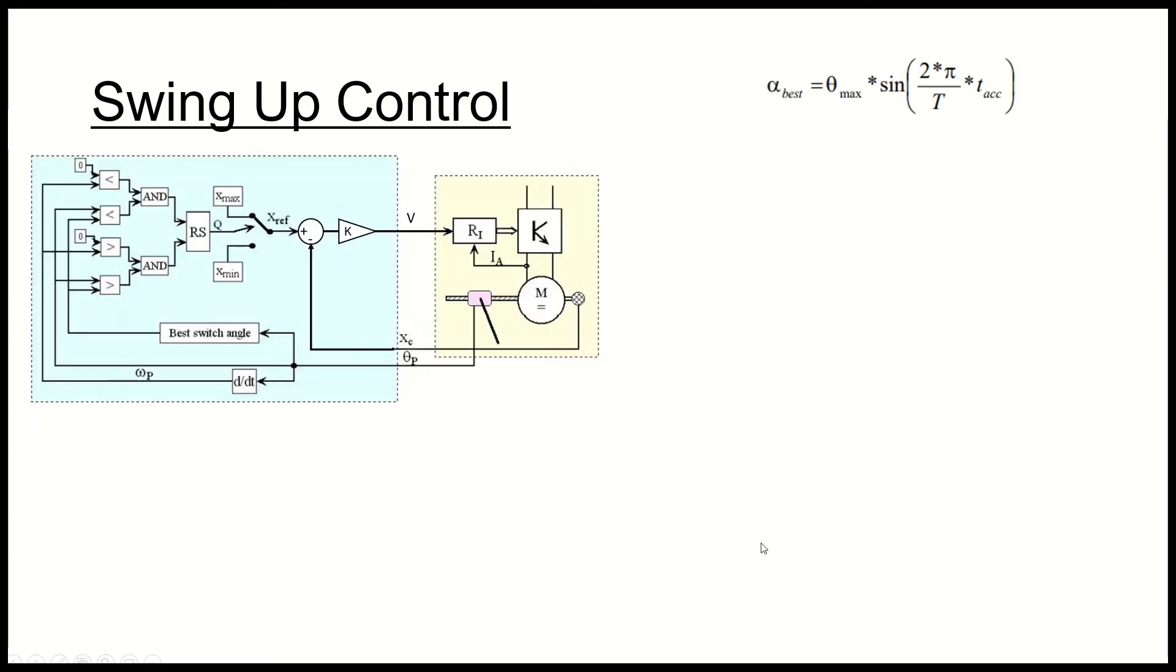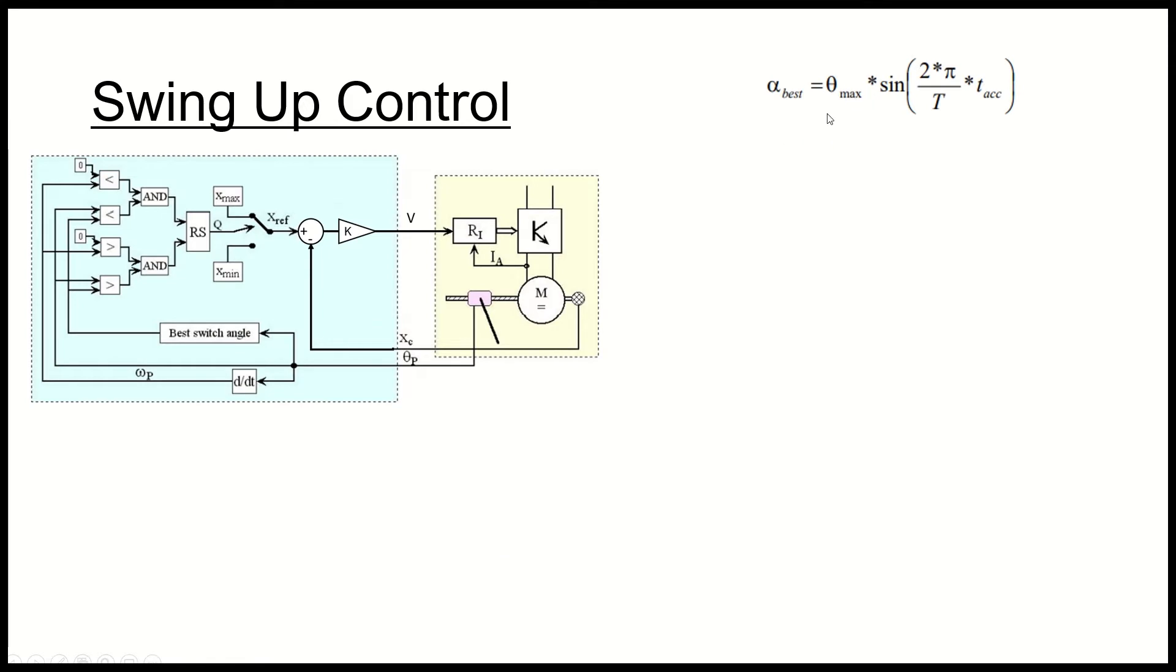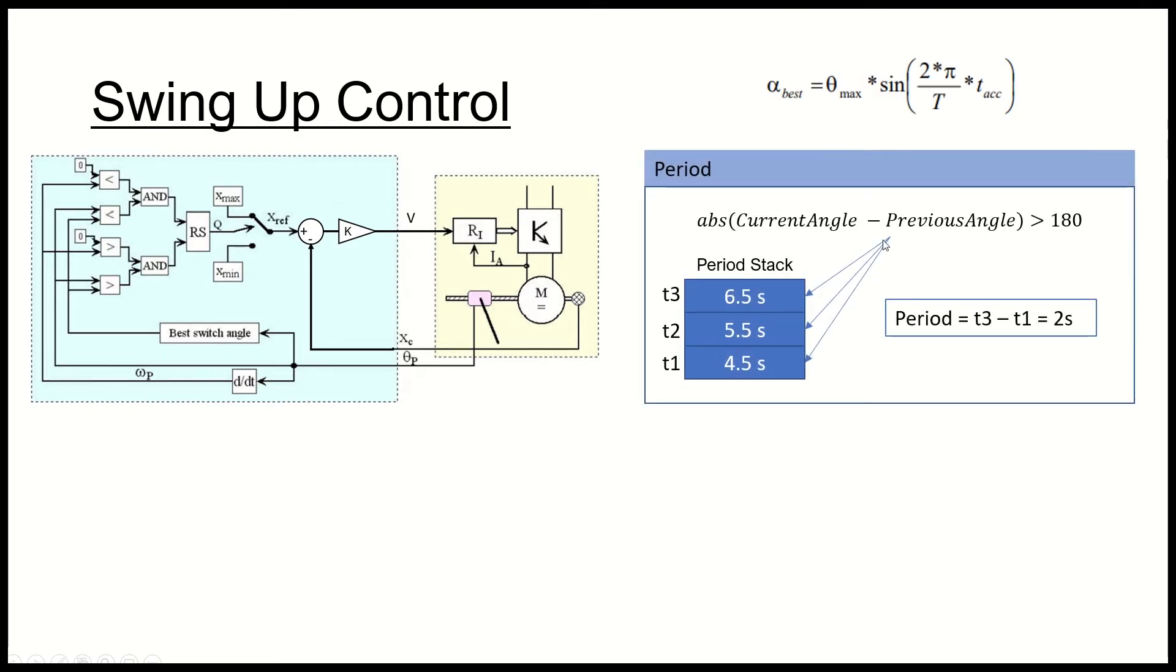It's quite interesting. How this works, you obviously need to compute a lot of parameters. A few of them is in order to compute this alpha best value. As I mentioned, it's a function of theta max, it's also a function of the pendulum period and a function of the time to accelerate for the cart.